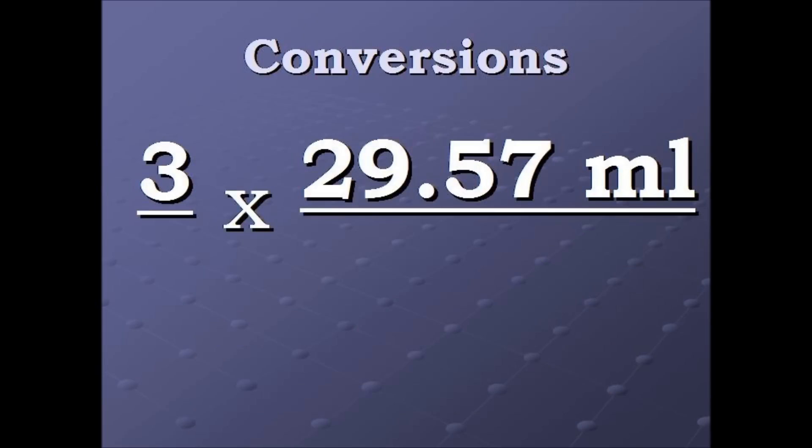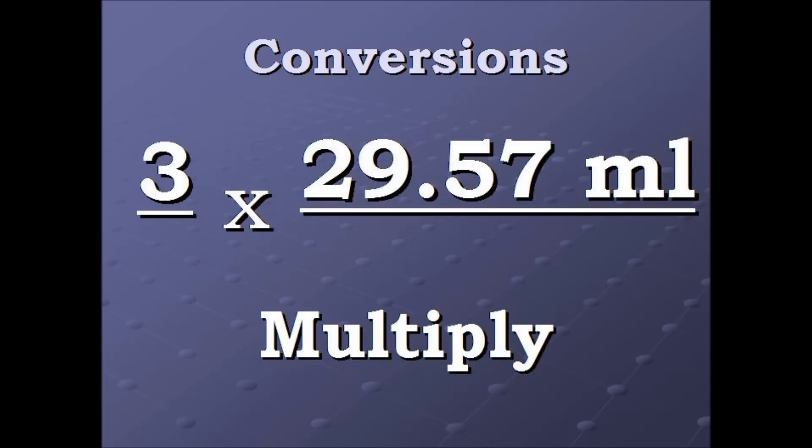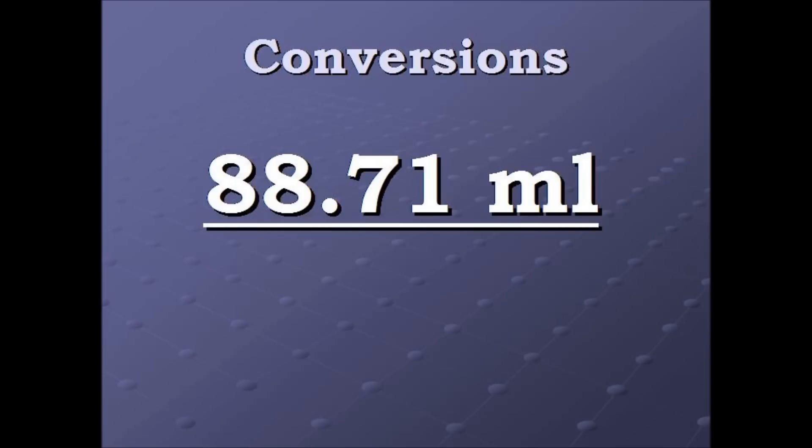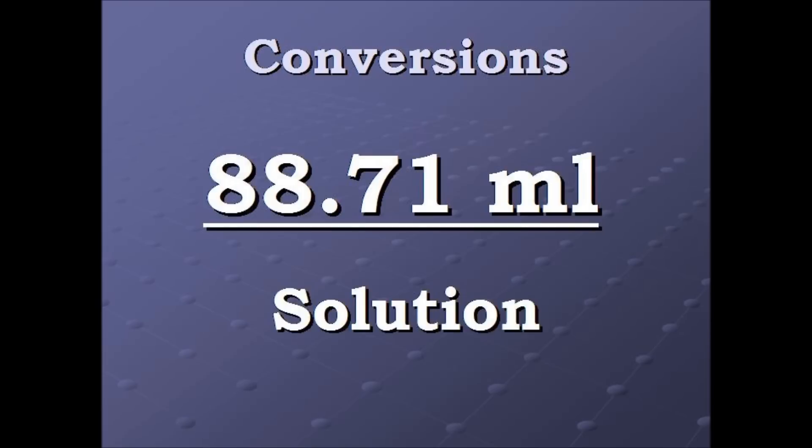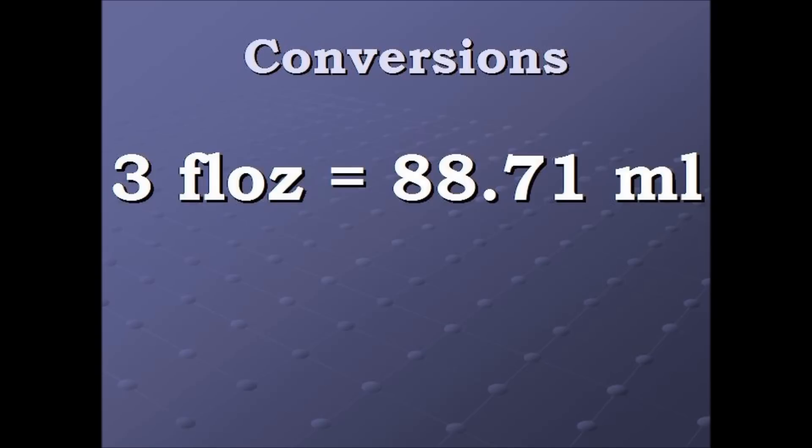Now we're left with three times 29.57 milliliters. We multiply that and end up with 88.71 milliliters, which is our solution. Three fluid ounces equal 88.71 milliliters.